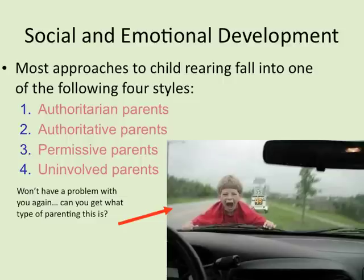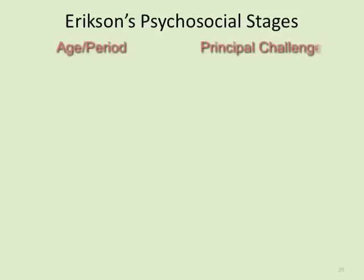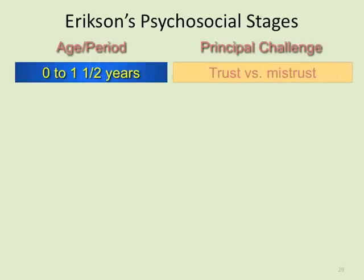Erikson is a major theorist we're dealing with this week. He examines psychosocial stages — the internal conflict between our social self. From birth to about a year and a half, we're dealing with trust versus mistrust: the belief that if we need our caregiver, they will come and be there for us.